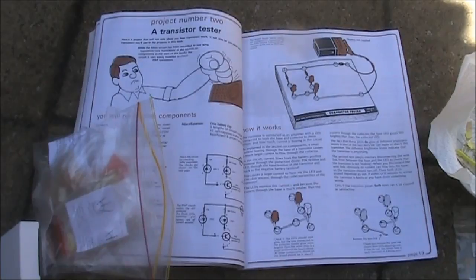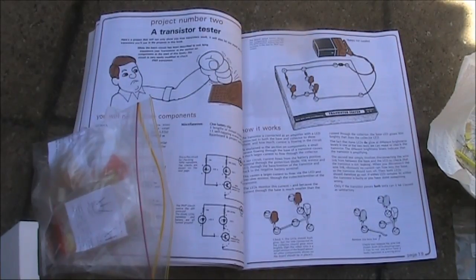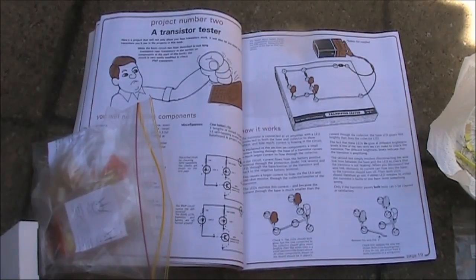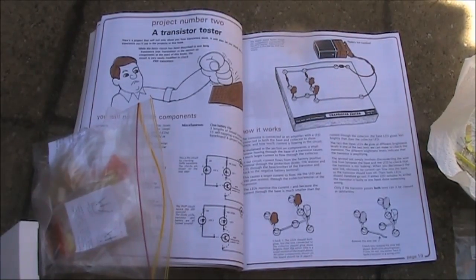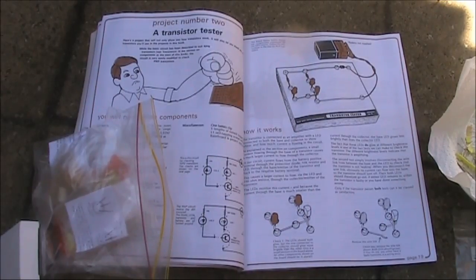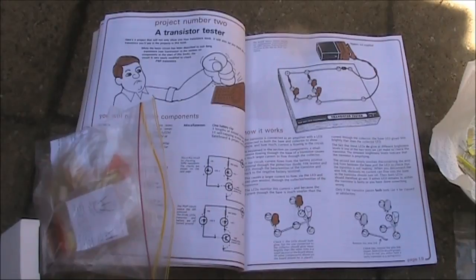It's actually a piece of test equipment, so you can show whether a transistor is working or not. The Transistor Tester is pretty simple. It's basically a few resistors and LEDs. One LED is in series with the base to indicate the base current, and the other in the collector circuit, to indicate the collector current.